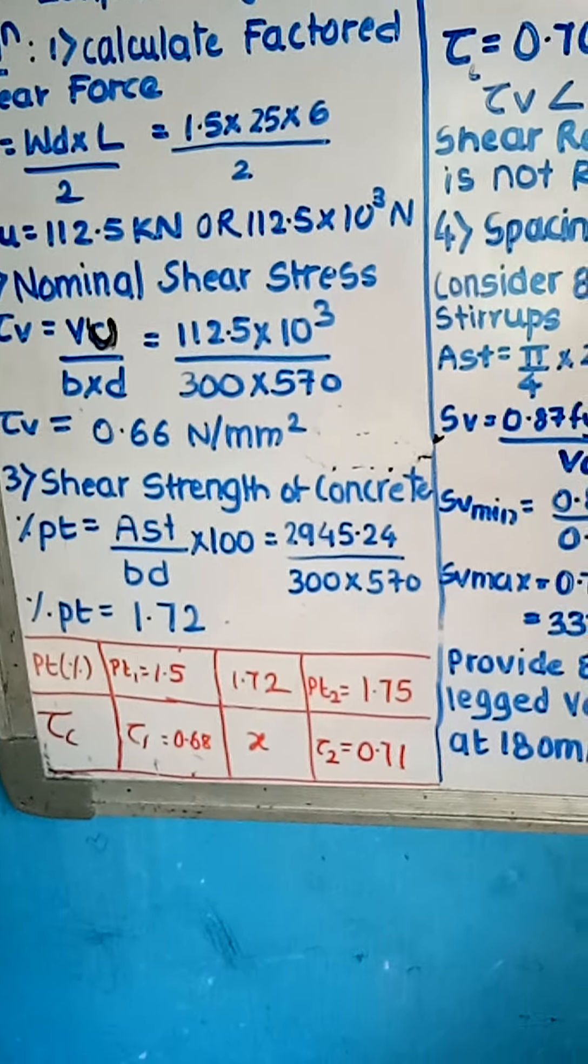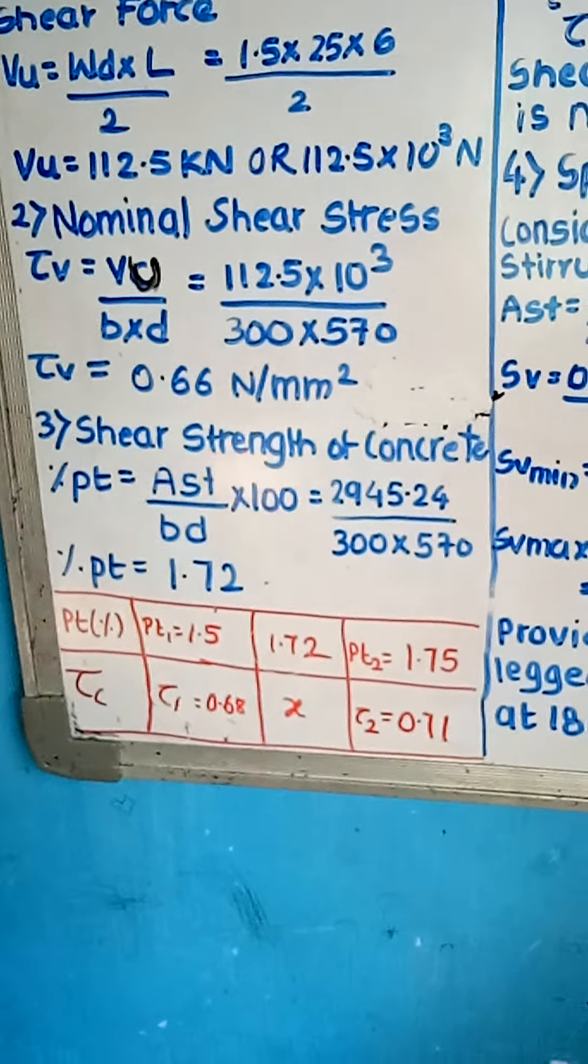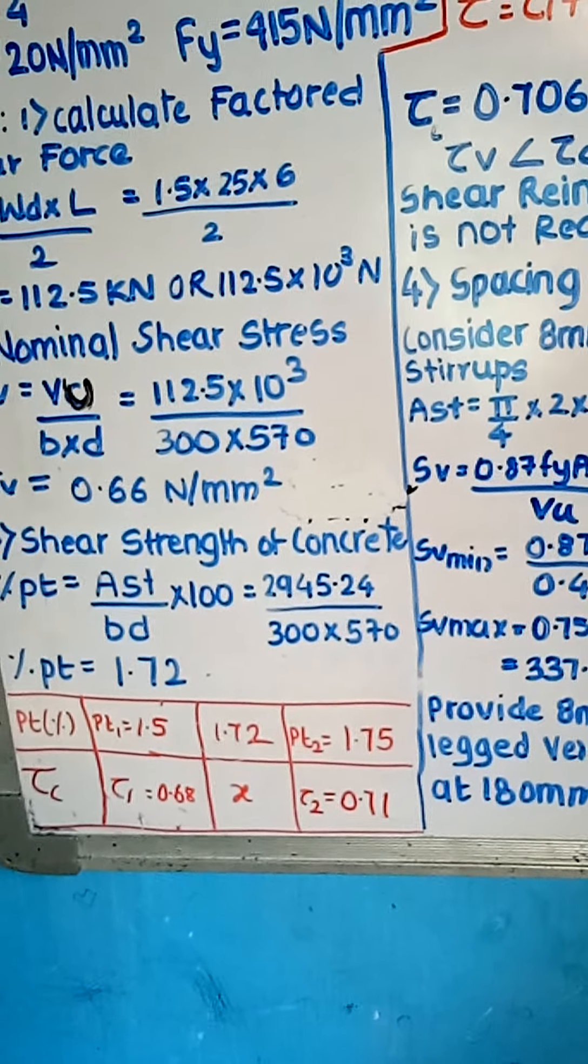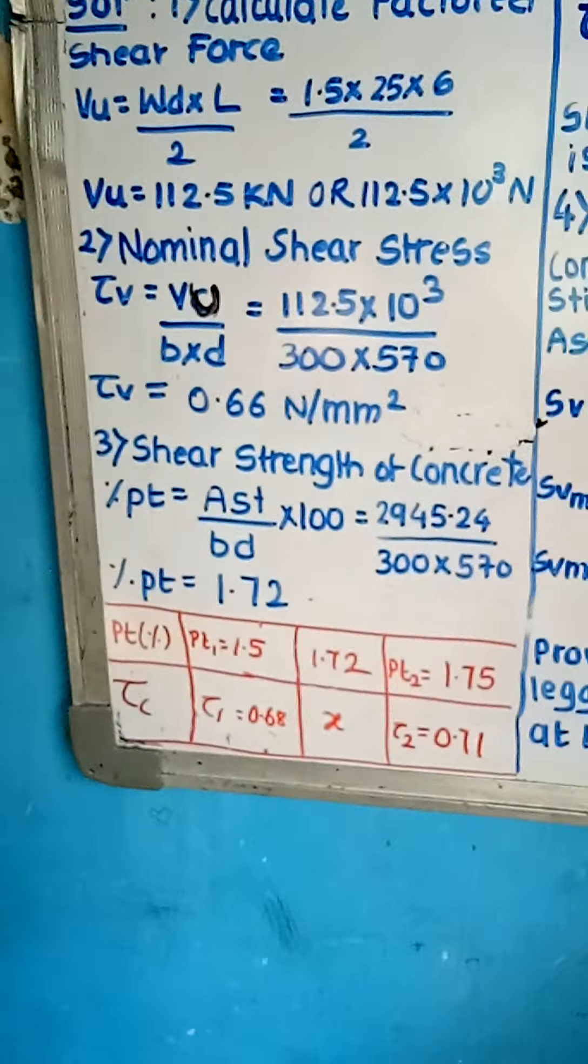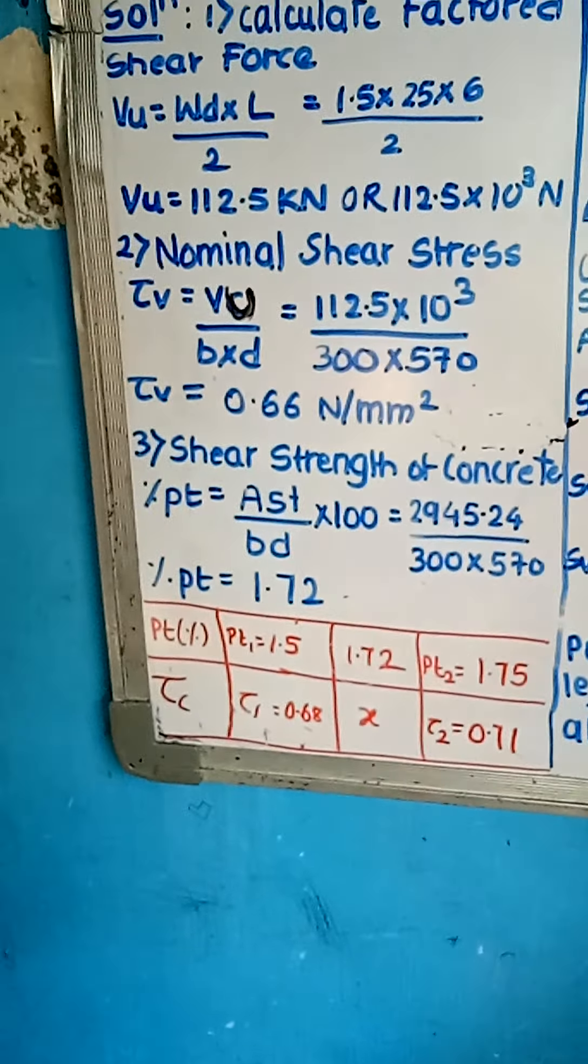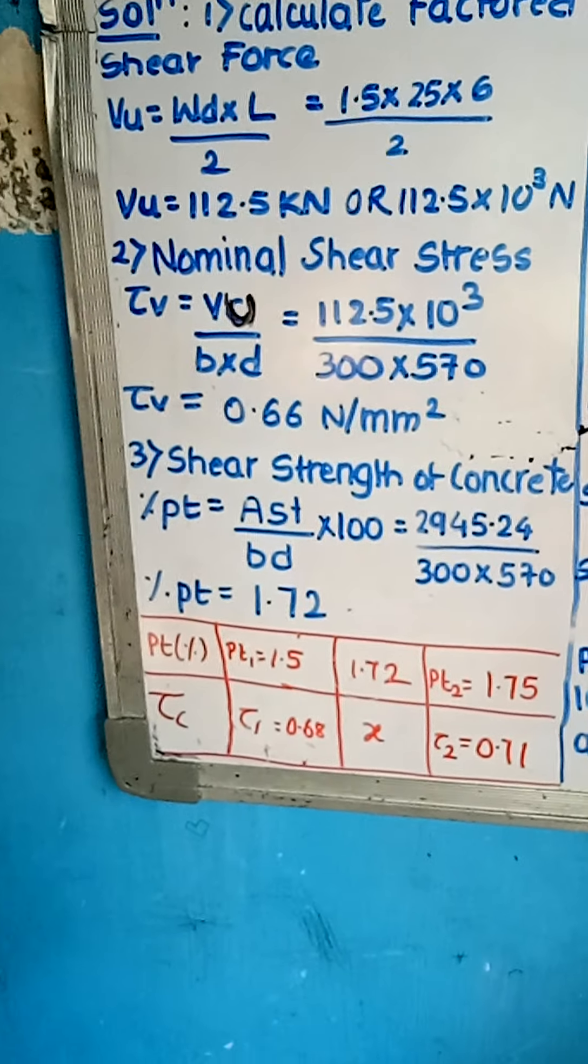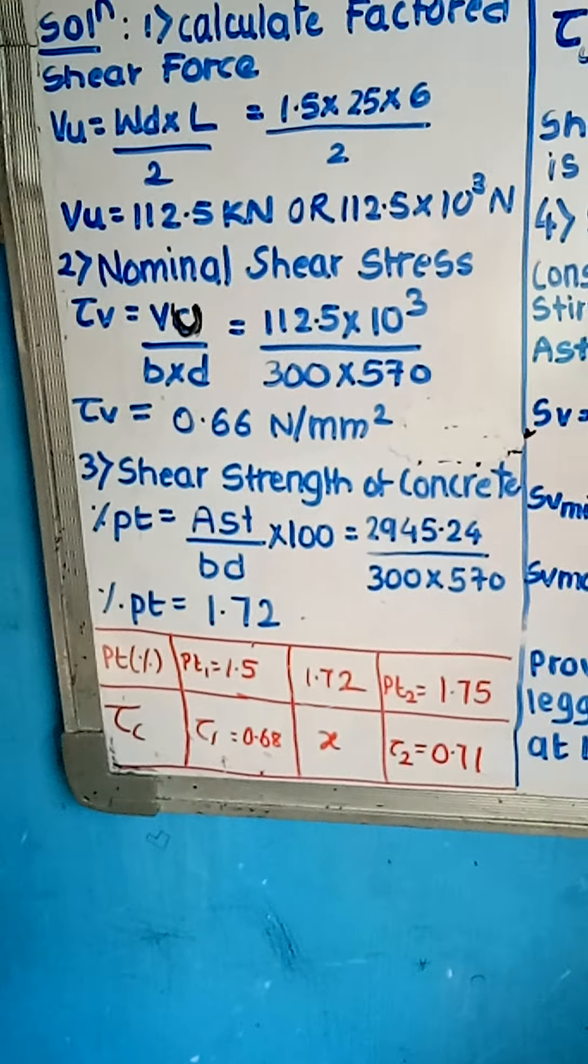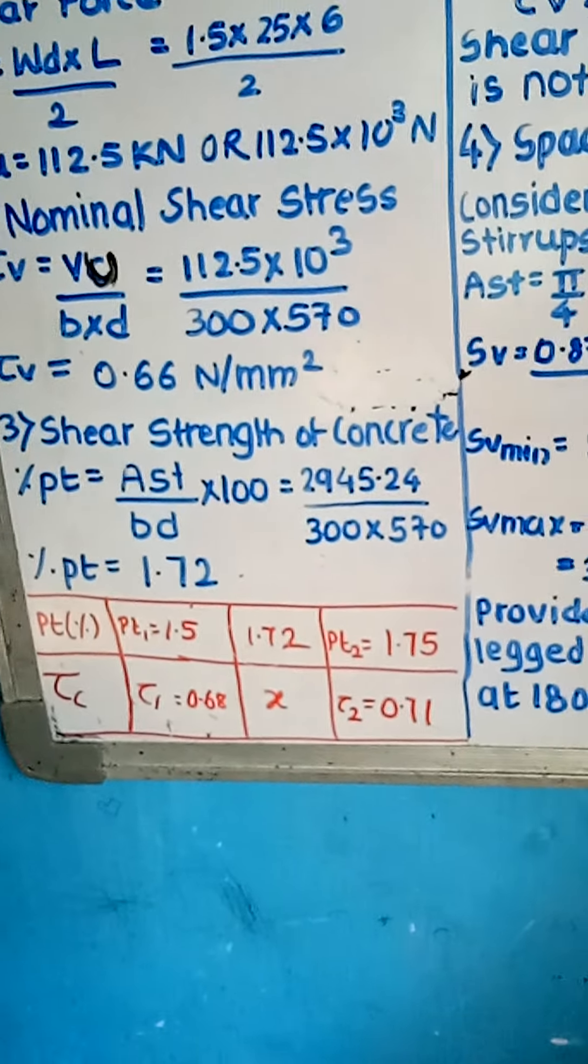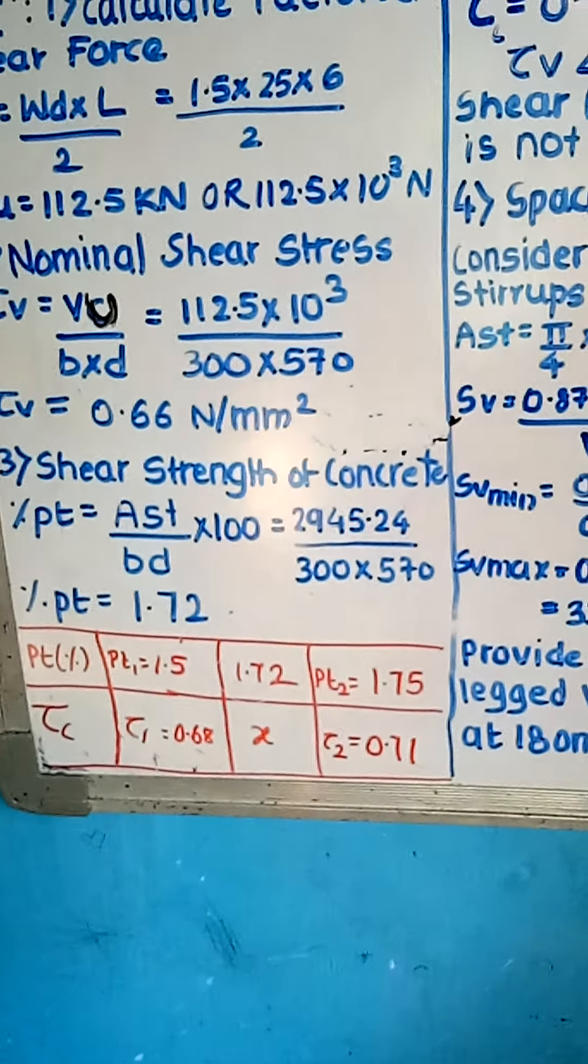Now the question doesn't mention anything further. Now we have to calculate tau C, which is shear strength of concrete. How to calculate from Pt limit and tau C? This is not mentioned in the question, so we have to remember this table. Starting from Pt limit, some maximum values this code has provided, and for tau C max we have to remember all these values.